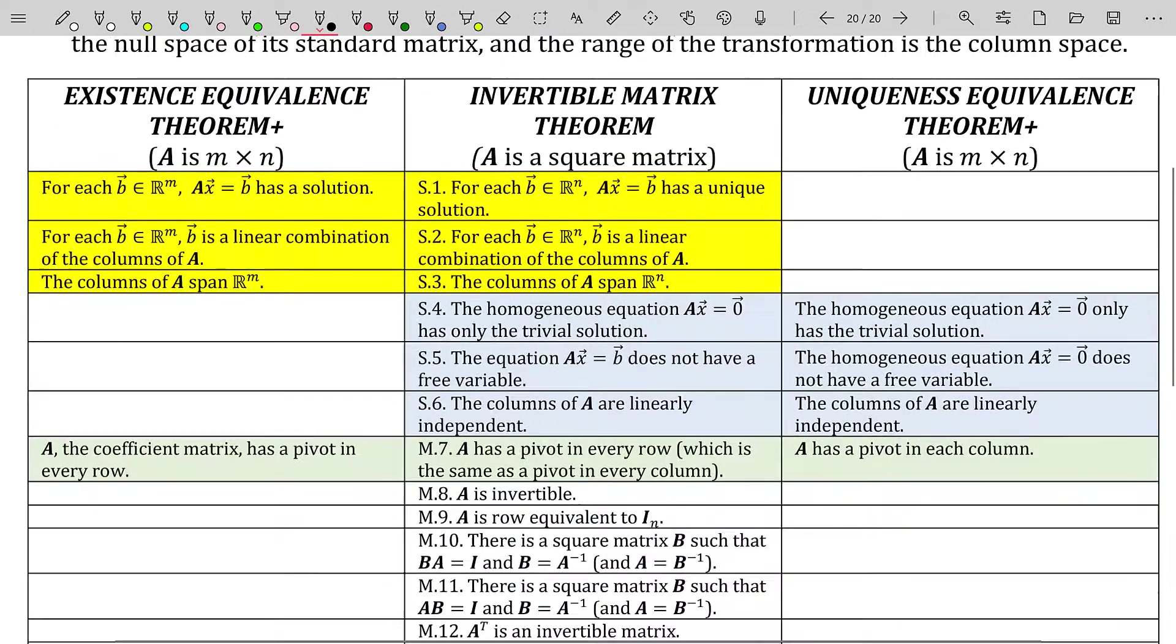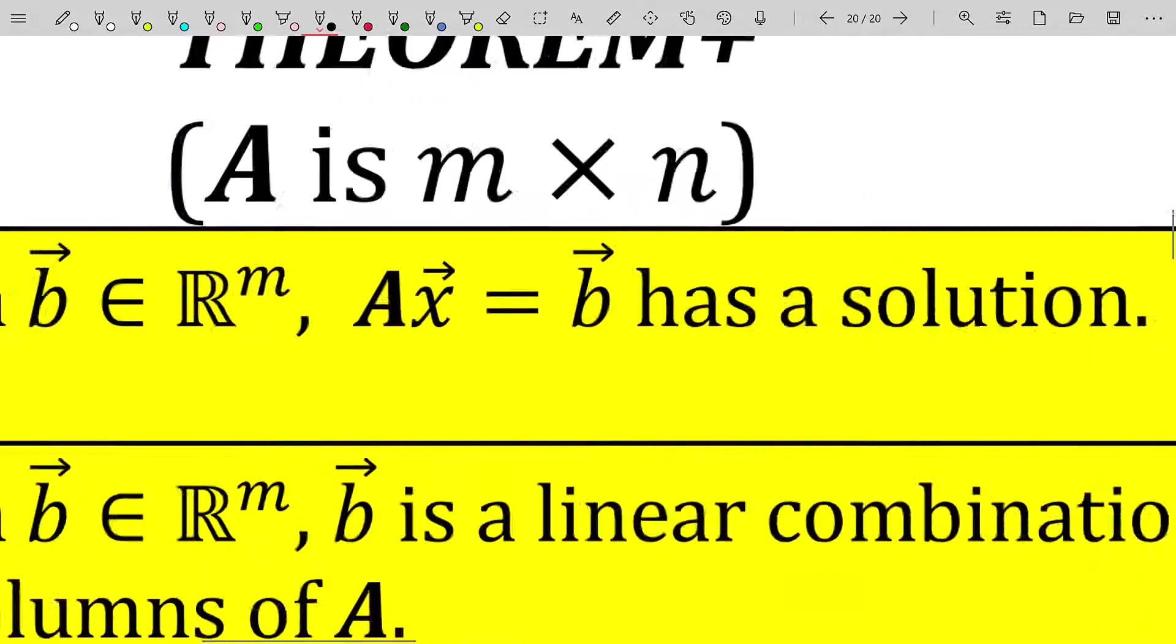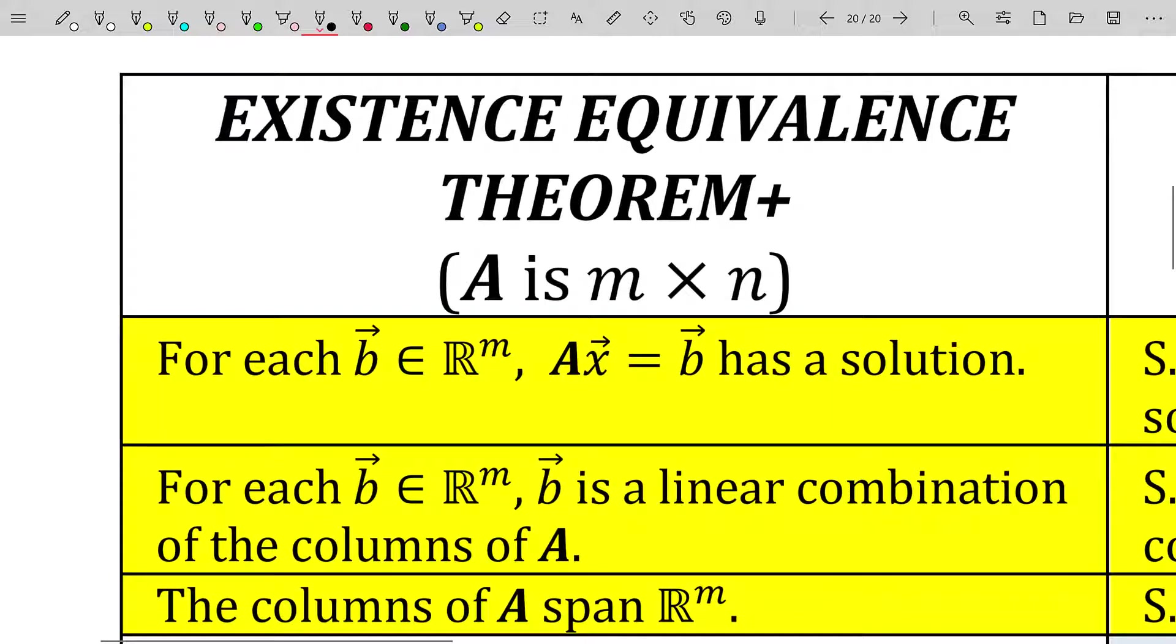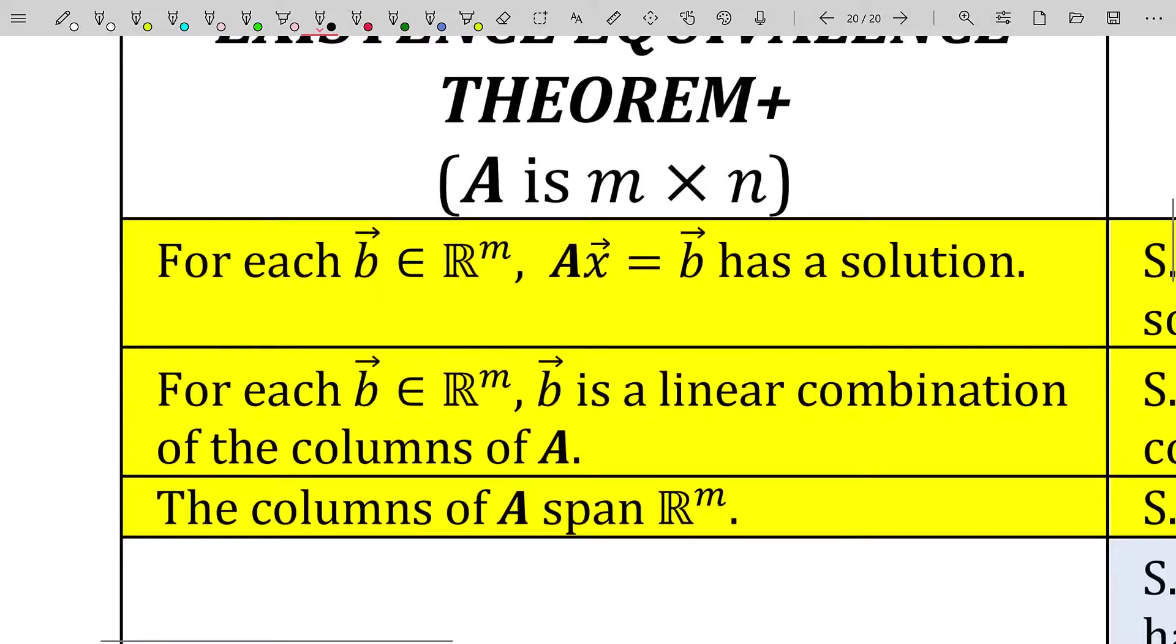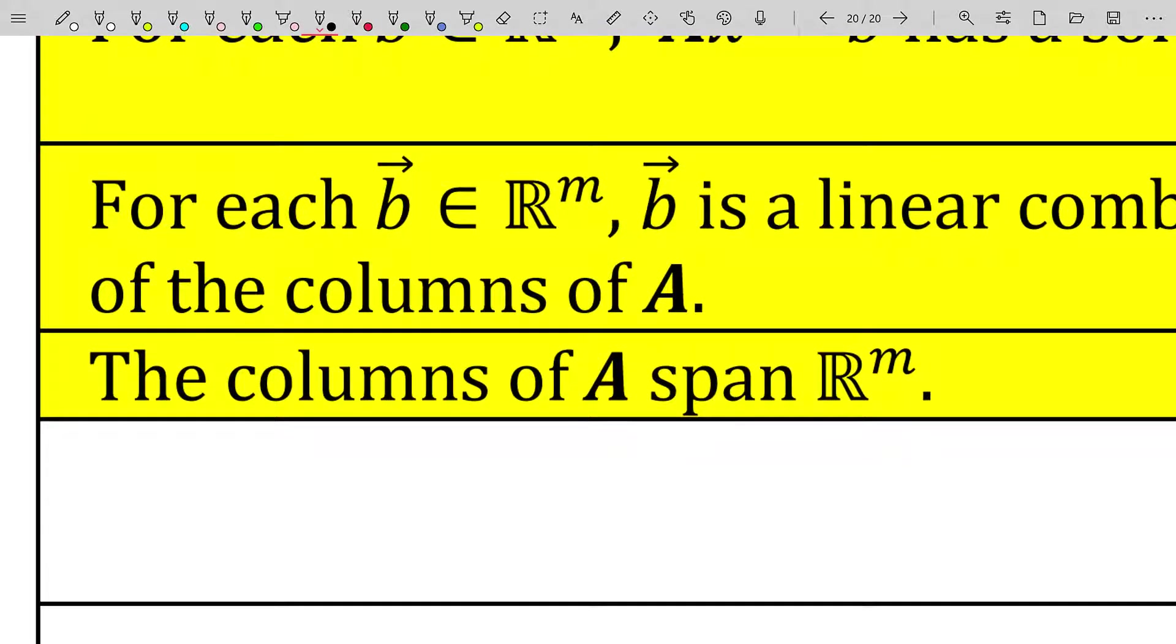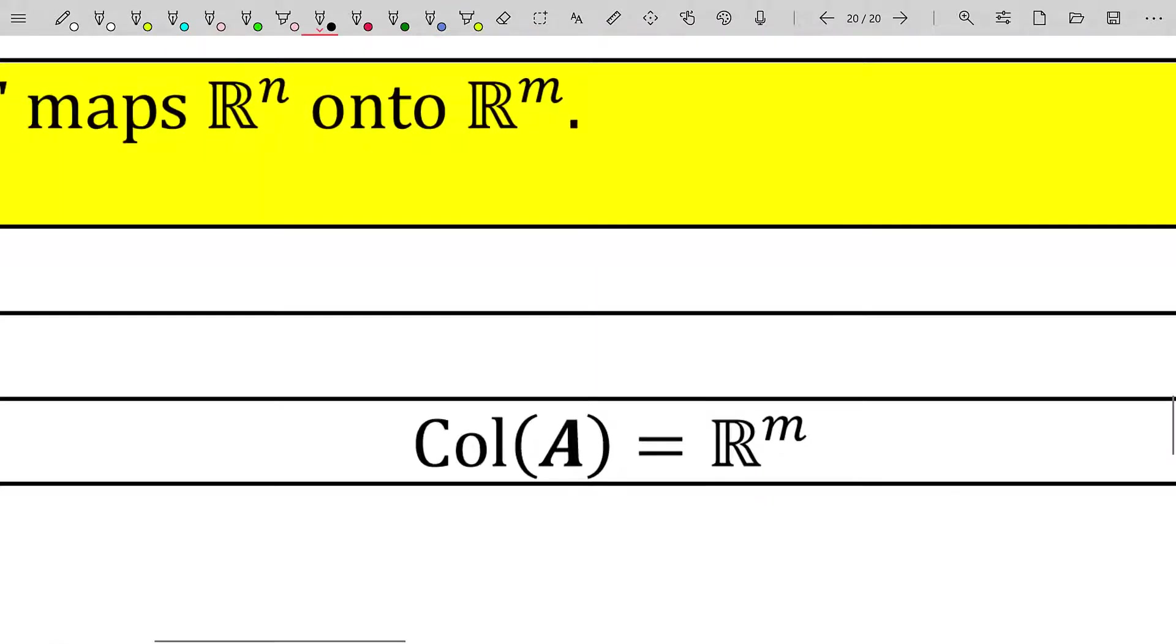Specifically, if you're one of my students, I have this somewhat clean table here which gives the invertible matrix theorem along with the existence equivalence theorem and the uniqueness equivalence theorem. If you look at the existence equivalence theorem, which is about rectangular matrices, not square ones, if we know that for each b in ℝᵐ, Ax equals b has a solution, then we know b is a linear combination of the columns of A, and the columns of A span ℝᵐ. That is the critical piece: the columns of A span all of ℝᵐ. The column space of A is ℝᵐ.